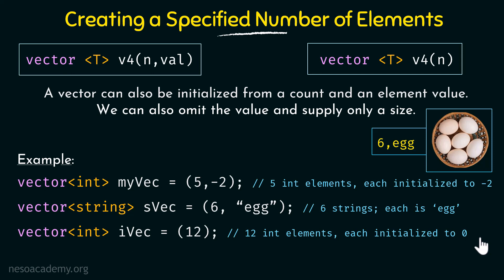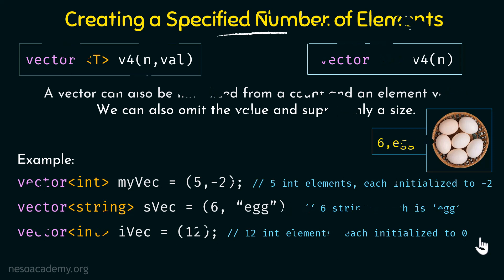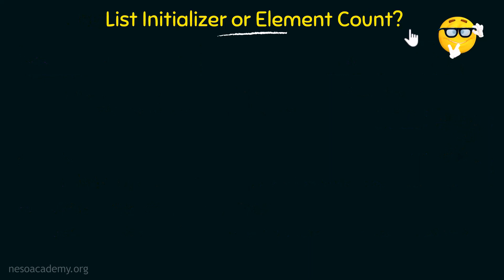Since we have seen the use of different types of brackets — curly braces and parentheses — and how values inside those brackets mean different things, let us take some examples to make ourselves thorough with the differences between list initializer and element count.